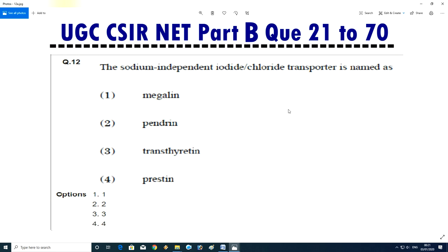Question No.12 - The sodium independent iodide chloride transporter is named as manglin, pendrin, transthyretin, or crestin? Answer is B, pendrin.